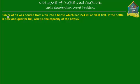This 'cc' over here means cubic centimeters or centimeter cube. CC is short for centimeter cube or cubic centimeter and it's a unit of volume. So 376 cc is the volume of oil that was poured from a tin into a bottle which had 224 milliliters of oil at first. If the bottle is now one quarter full, what is the capacity of the bottle?